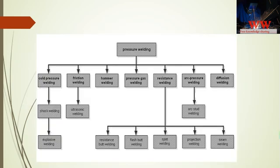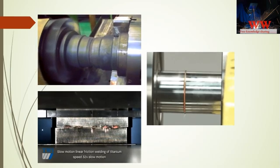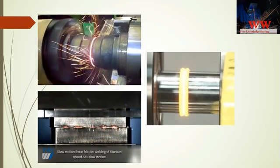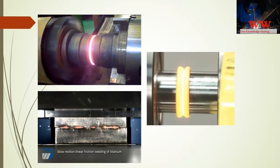This chart shows the classification of pressure welding processes. Friction welding, resistance welding, and arc pressure welding (stud welding) are widely used in industry. The videos show rotary friction welding and linear friction welding, where first heat is generated through friction and then pressure is applied.